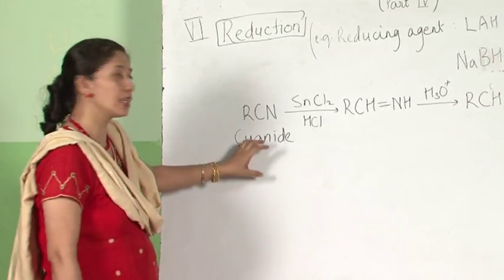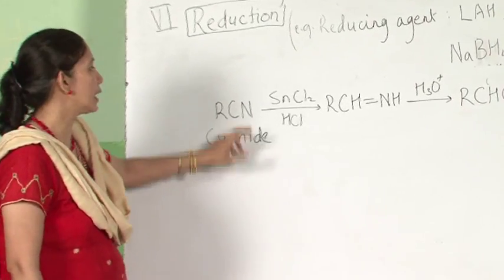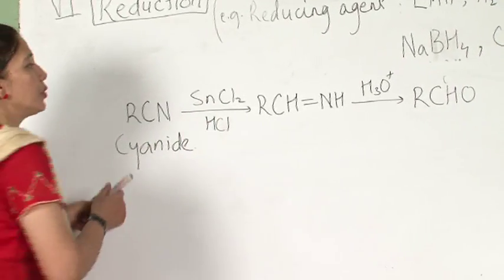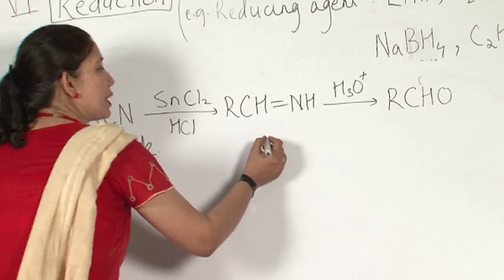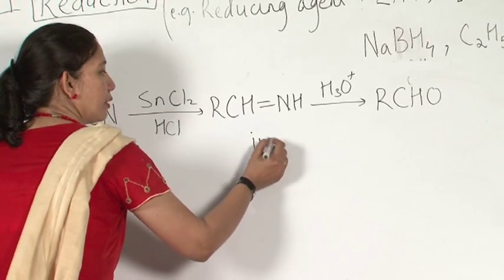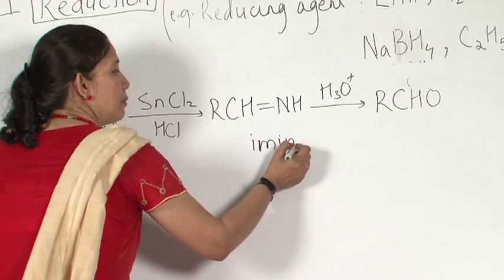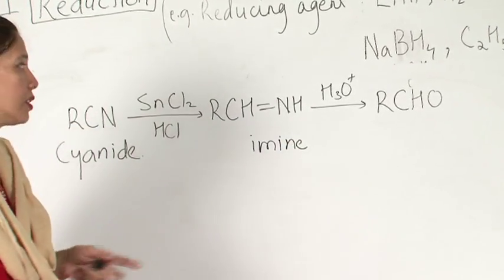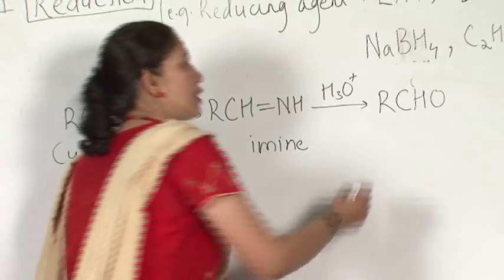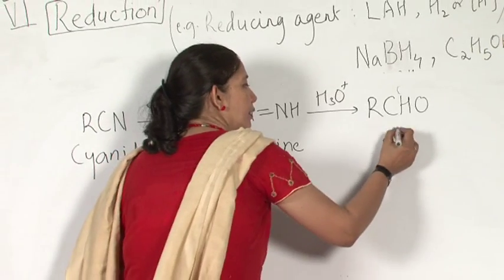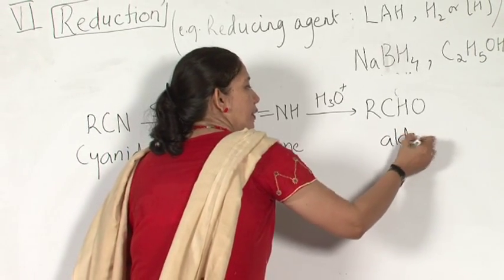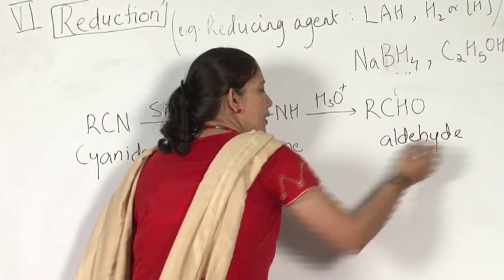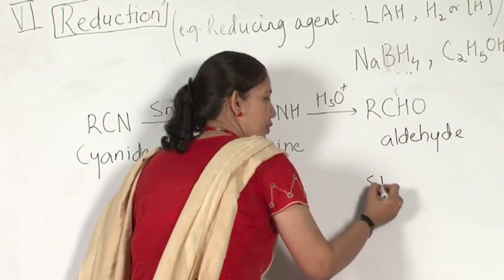When a cyanide reacts with SnCl₂ and HCl, this gives the corresponding imine. The imine undergoes acid hydrolysis to give rise to an aldehyde. This is called the Stephens reaction.